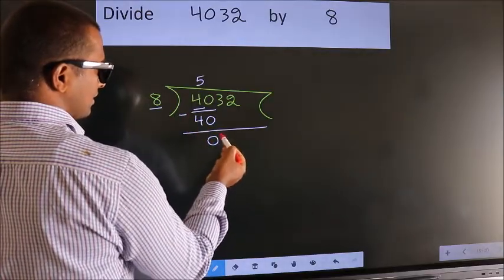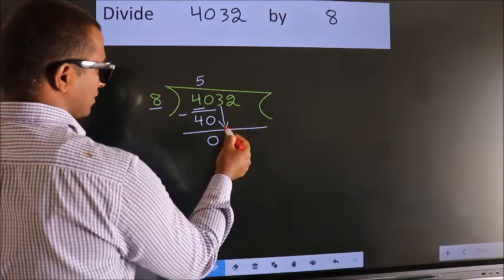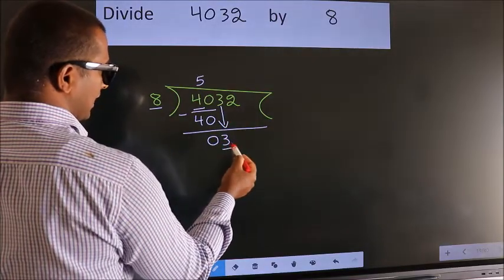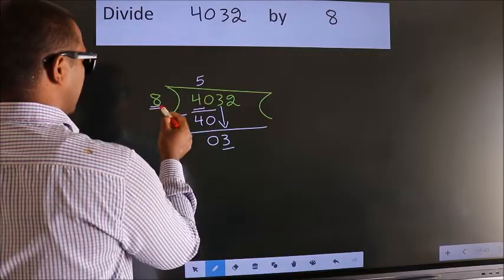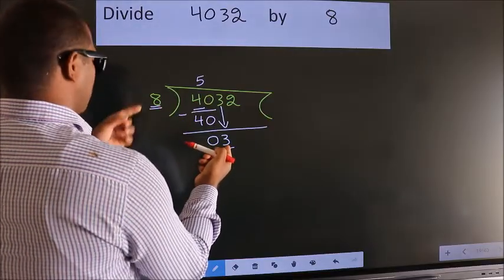After this, bring down the beside number, so 3 down. Here we have 3, here 8. 3 is smaller than 8.